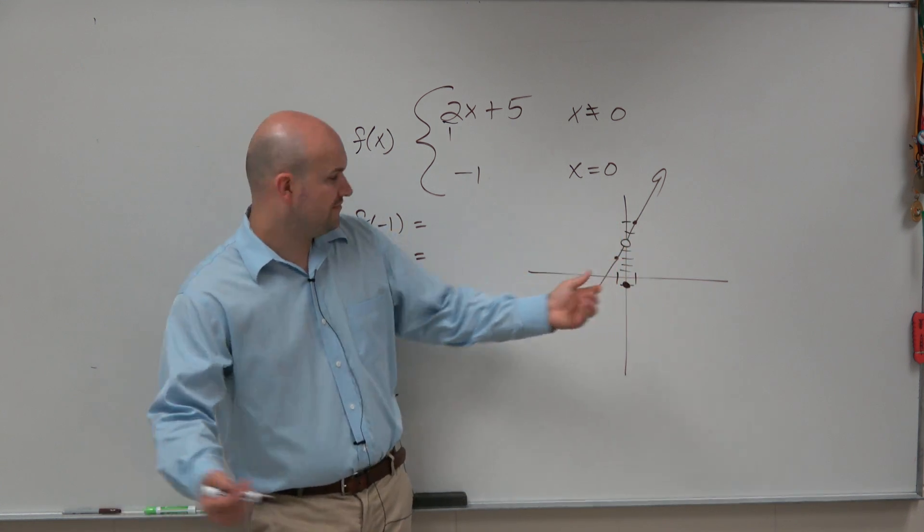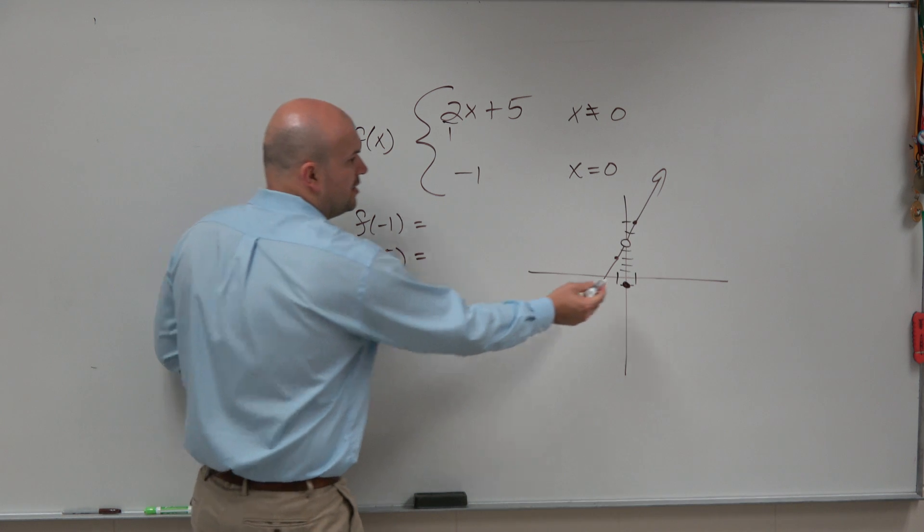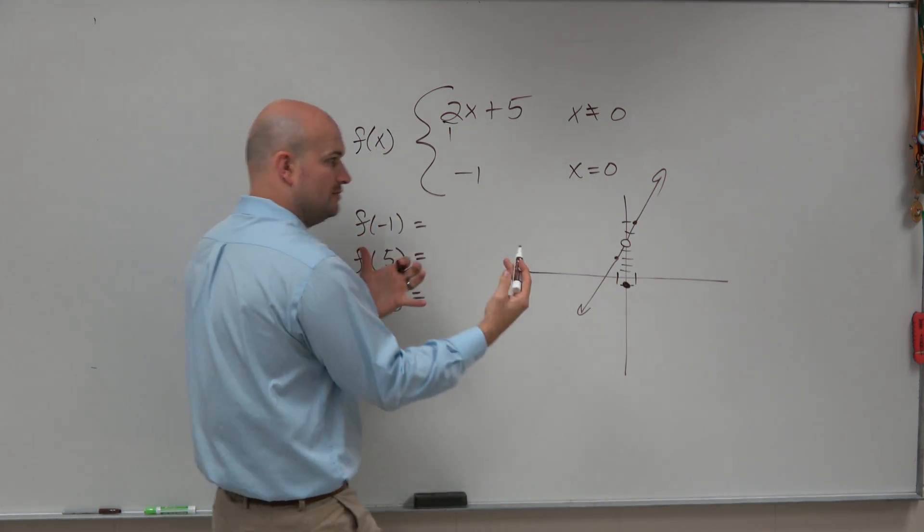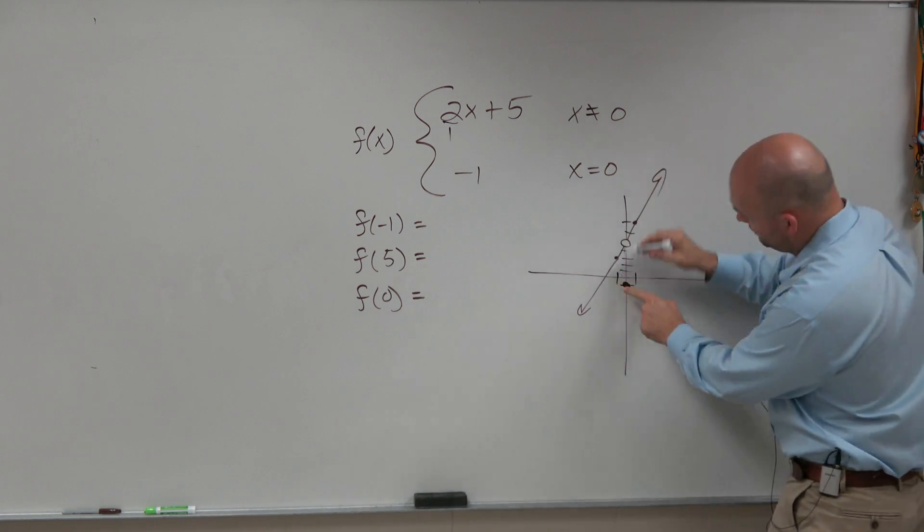So when you're evaluating the function, for instance, f of negative 1, we're basically looking at the function. What is this function's value at negative 1? Well, if you look at the graph, you can see at negative 1 there's a point there.